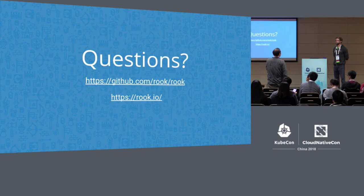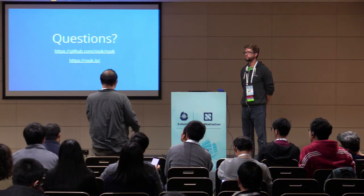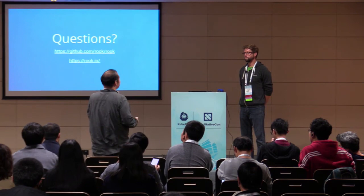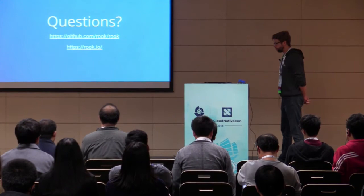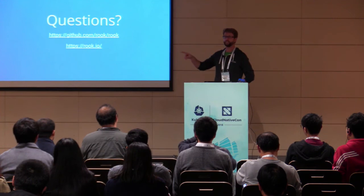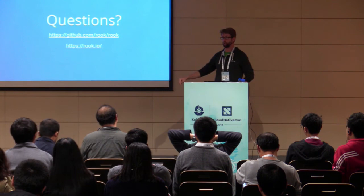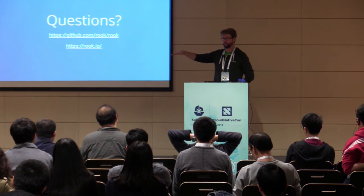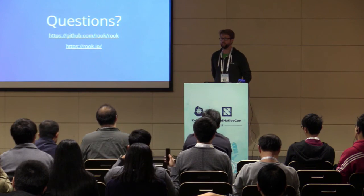Two questions from the audience. The first is about Rook's performance compared to native Ceph. What's interesting to note is that Rook is not on the data path — the storage solutions themselves, like Ceph or CockroachDB, are the only ones touching bytes being written and read. Those containers also get direct access to the raw devices — /dev gets mounted — so there's really not a lot of extra layers getting added to degrade performance. In our benchmarking testing, performance is basically on par with other bare metal solutions.